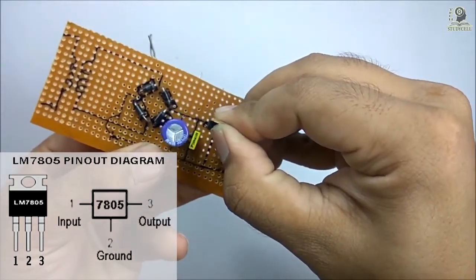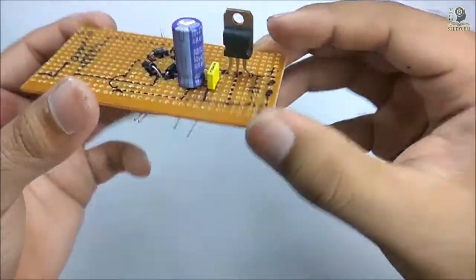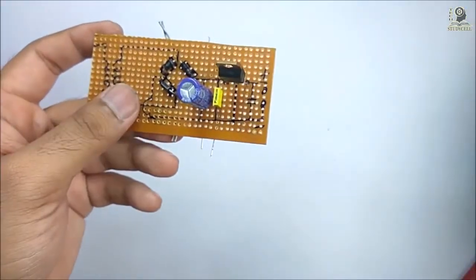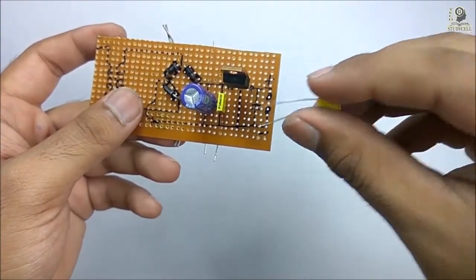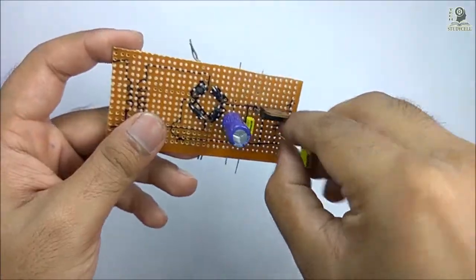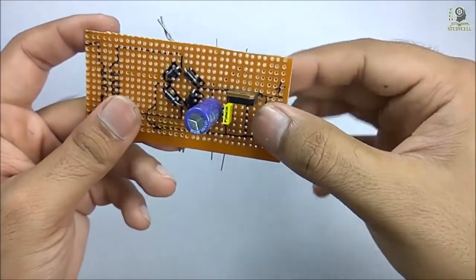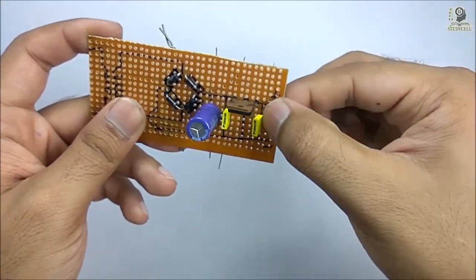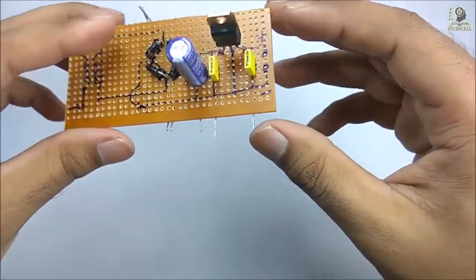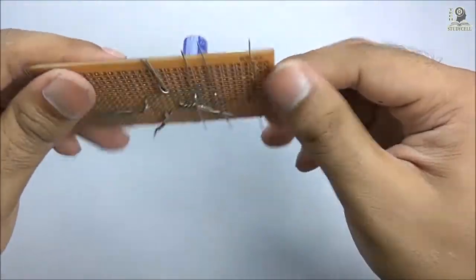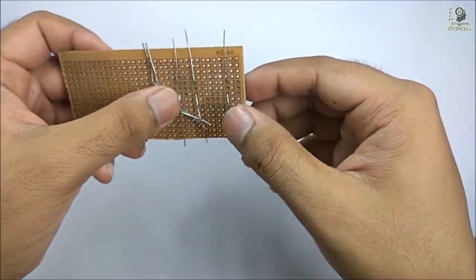I am placing this IC on this Vero board as shown in the circuit diagram. After this, I have to place this 0.1uF capacitor across the output of the IC. All the components have been placed on this PCB. Now I have to solder all the components as shown in the circuit diagram.